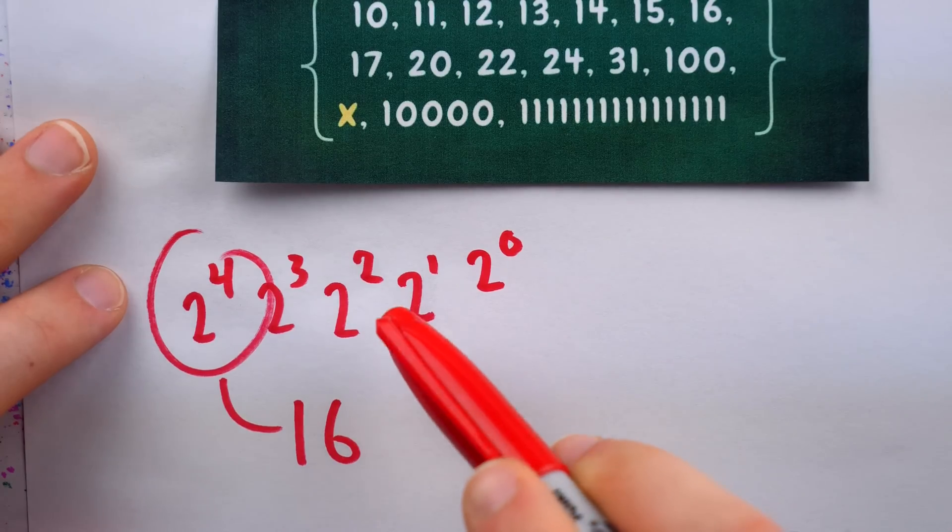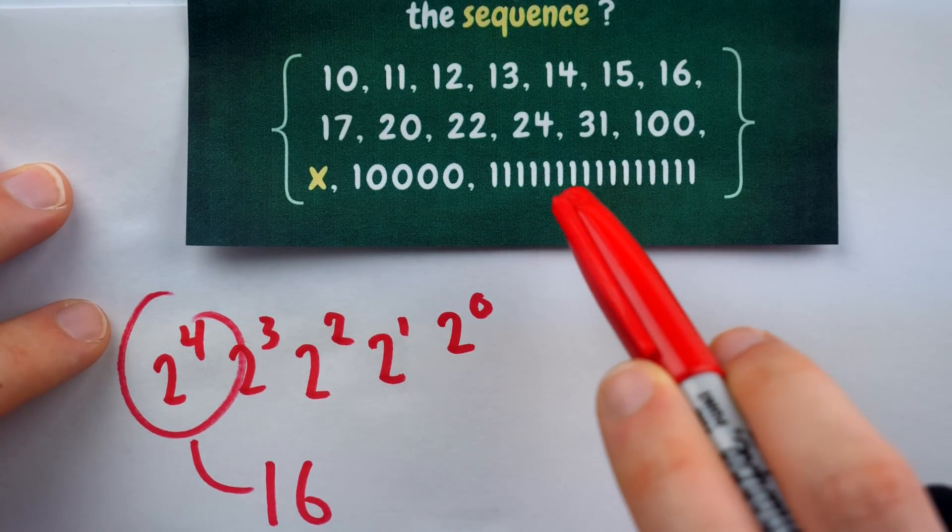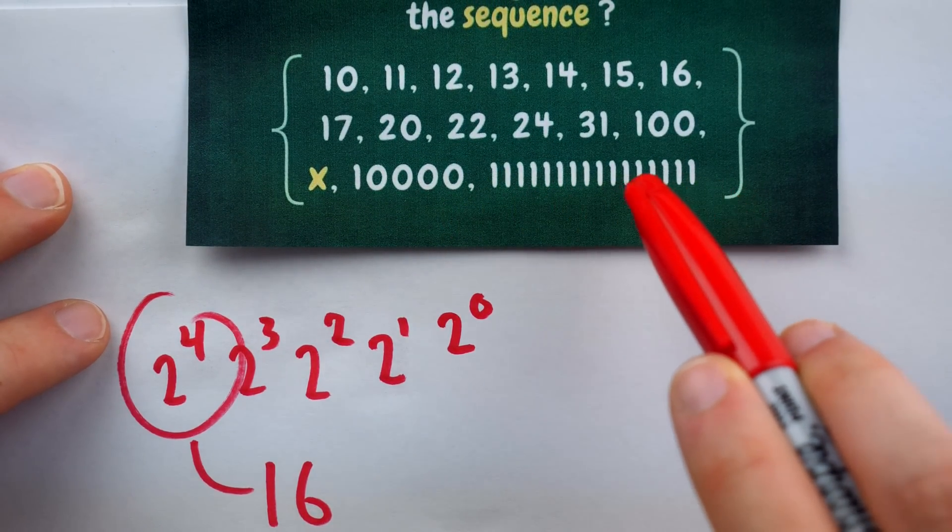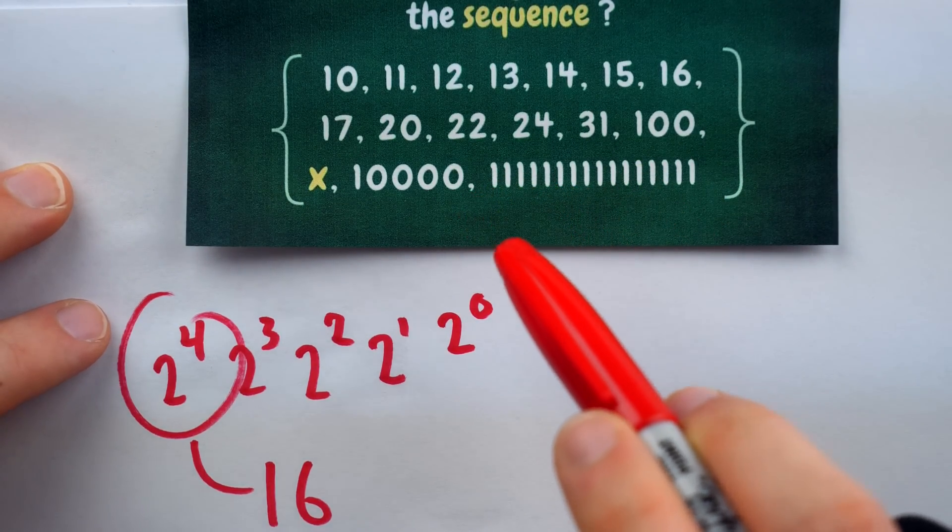We then realize if this is 16 in base 2, well, actually, this is 16 as well, but in base 1, where the only digit available to us is 1, so to express 16, we just have to write 1 16 times.